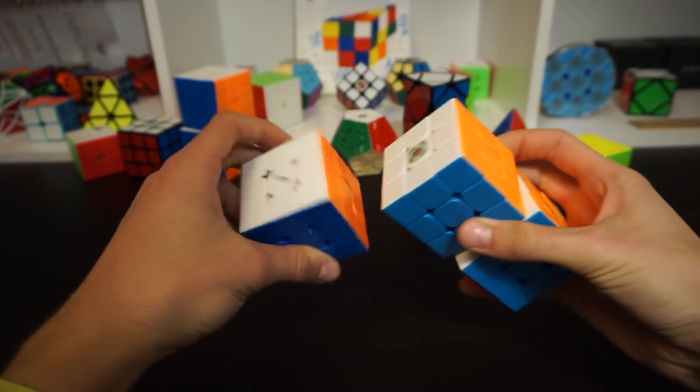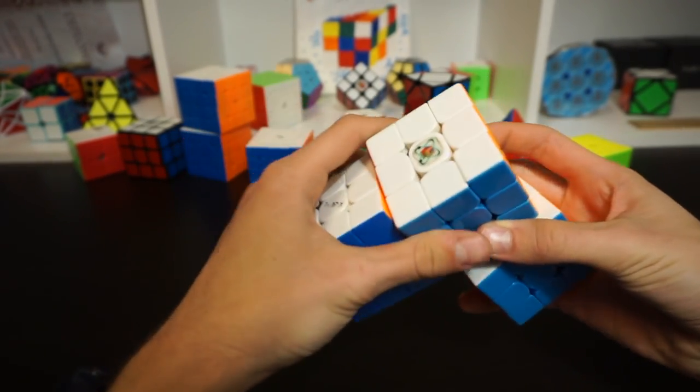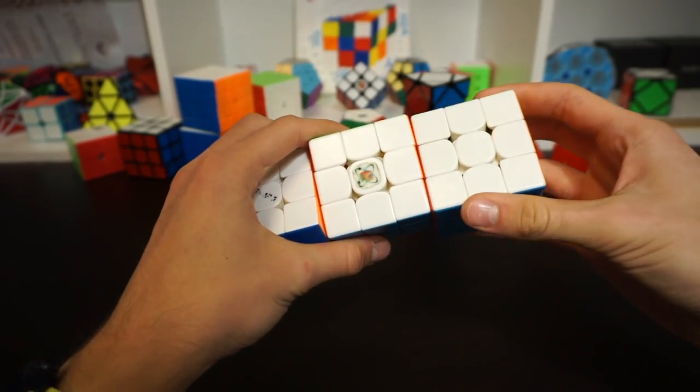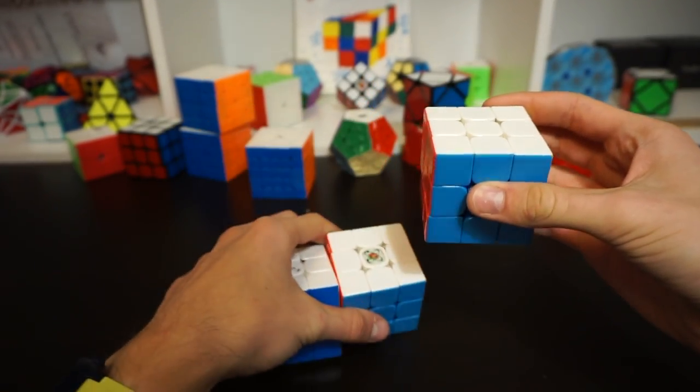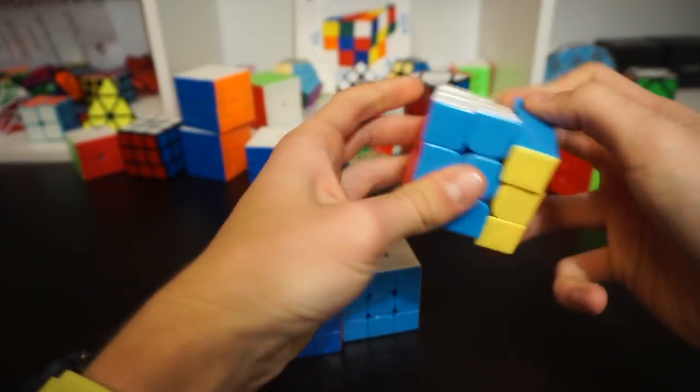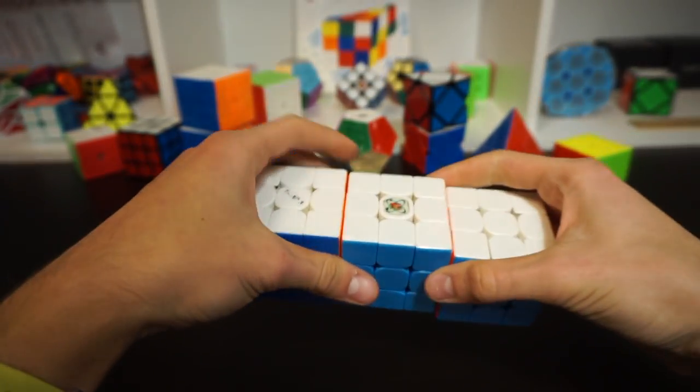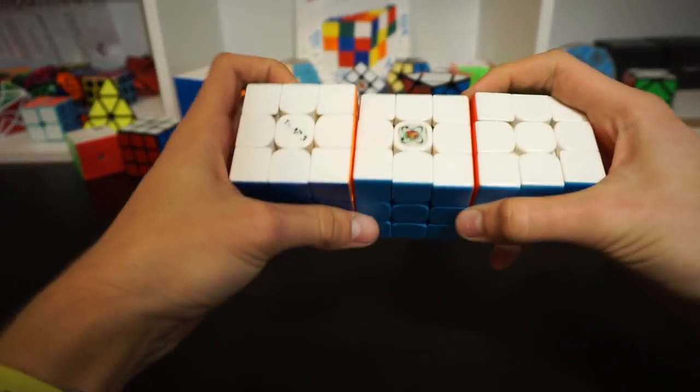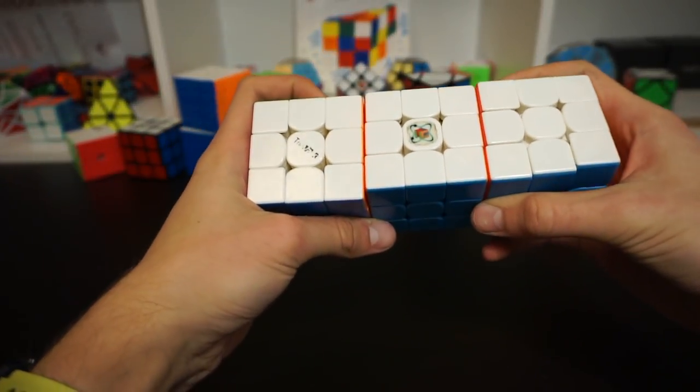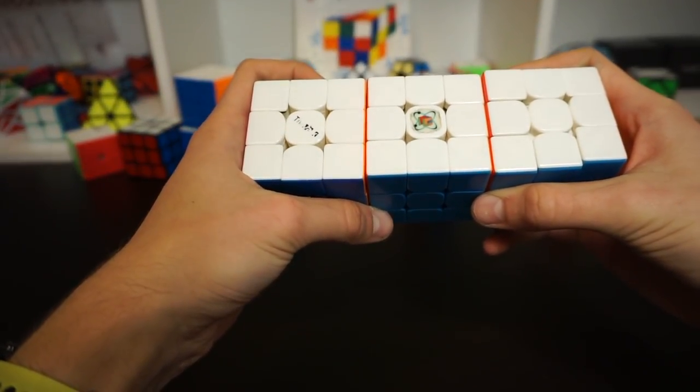Next up is 3x3 multi-blind and this is the last event. I will be using the Valk, the Weilong GTS 2, and the MF3RS2. This one is a really good cube and my goal is to solve these three things blindfolded and that is it.